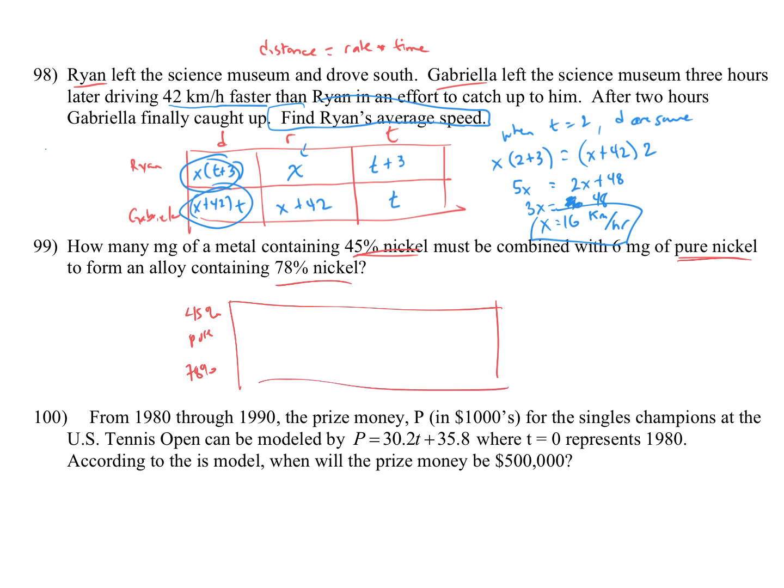In this problem we have milligrams of an alloy, basically the metal with some mixture of metals in it, and then we have the amount of nickel. So I'm going to write up here the amount of that metal, and then here I'm going to write the amount of nickel. You're told that you're looking for how many milligrams of a metal containing 45% nickel, so we're going to call that x, must be combined with six milligrams of pure nickel. So six milligrams of pure nickel to form an alloy containing 78%. If we're adding x grams, sorry milligrams, to six milligrams, then the 78% would have x plus six milligrams.